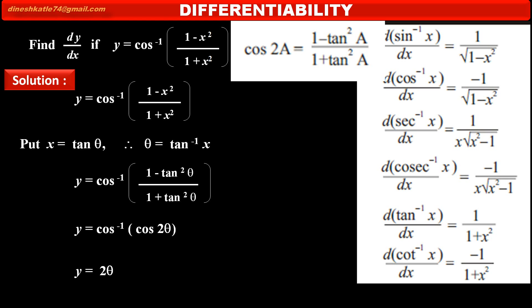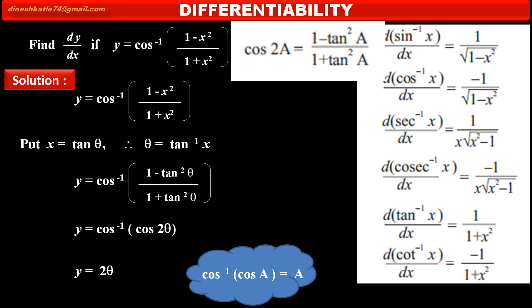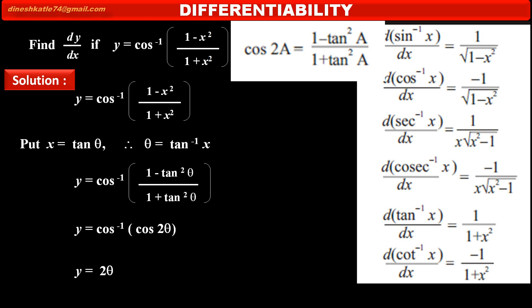Therefore, y is equal to 2 theta. Cos inverse of cos 2 theta is 2 theta, according to the identity cos inverse of cos a equals a. Therefore, substituting the value of theta, we get y equal to 2 into tan inverse x.